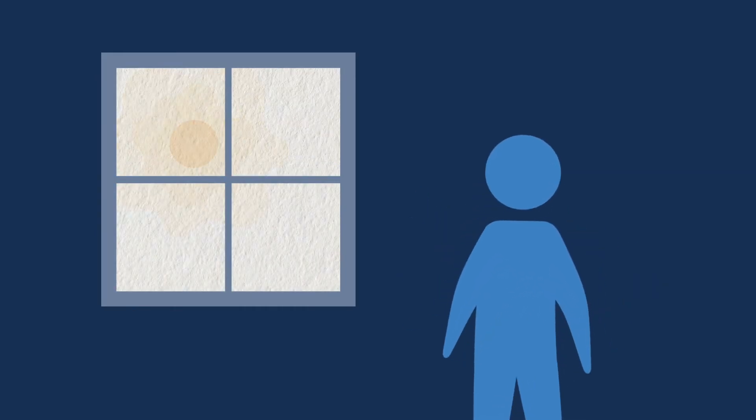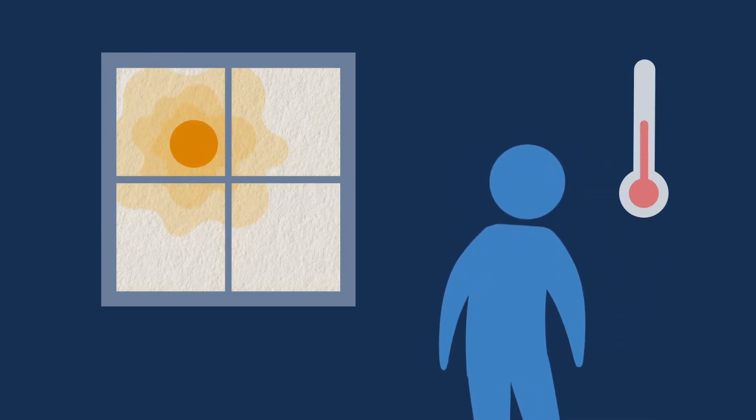Because our planet's climate, or weather, is changing, severe weather is happening more often, and temperatures are rising in many places around the world. Climate change is just one way that our environment affects our health.